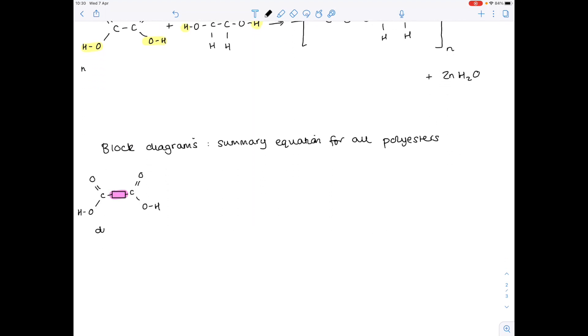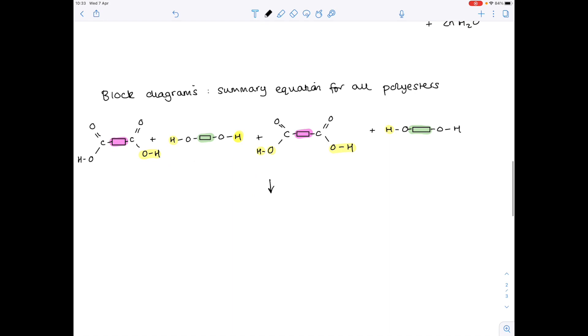So here's a block diagram representing our dicarboxylic acid. Here's our block diagram representing our diol. And in this example I'm actually going to show you 4 subunits. So 2 dicarboxylic acids and 2 diols. Now in terms of losing the water molecules, these atoms need to be lost. So let's draw the product.